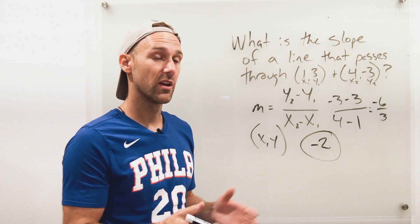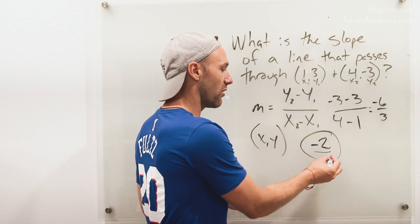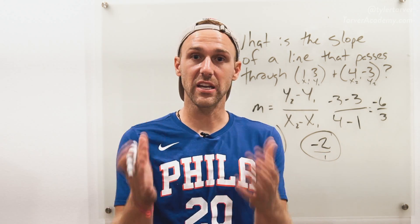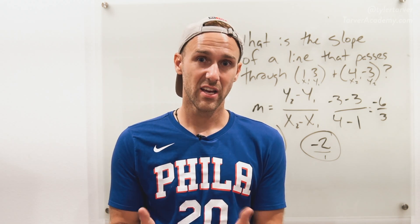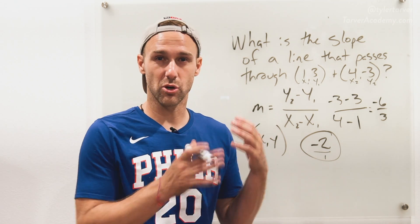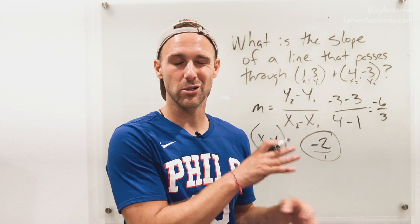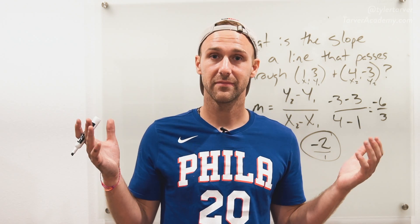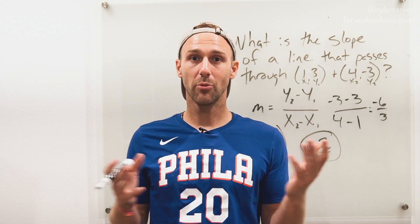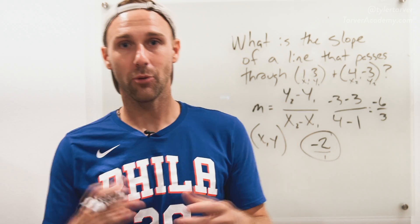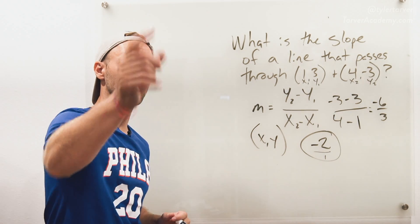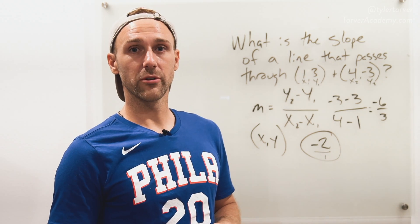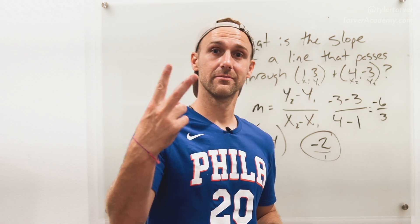That is our slope. Now, if you see negative two over one, that's okay — that's the same thing, because anything divided by one is still itself. So you're probably going to see negative two, but there's a chance it could be negative two over one. That's it, guys! You just learned slope. Hope this helped and hope you ace every test. If you could subscribe, all of your dreams will come true. Thank you guys. Peace.